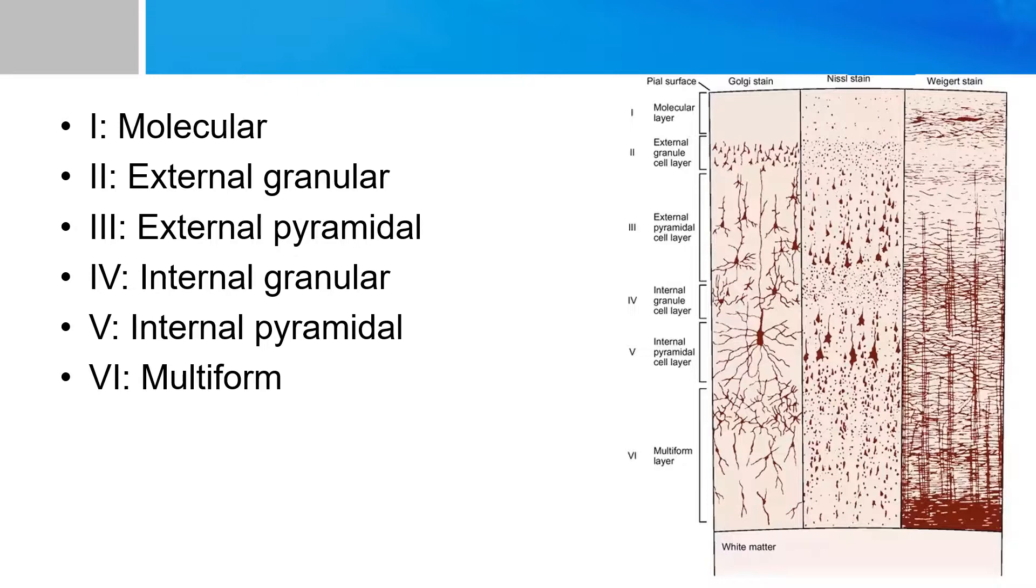They're roughly alphabetical, and so MO is on the top in layer one, and MU is on the bottom layer six, multiform. Next, there are external layers and internal layers. And obviously, the external layers are on the top, because they're more external.